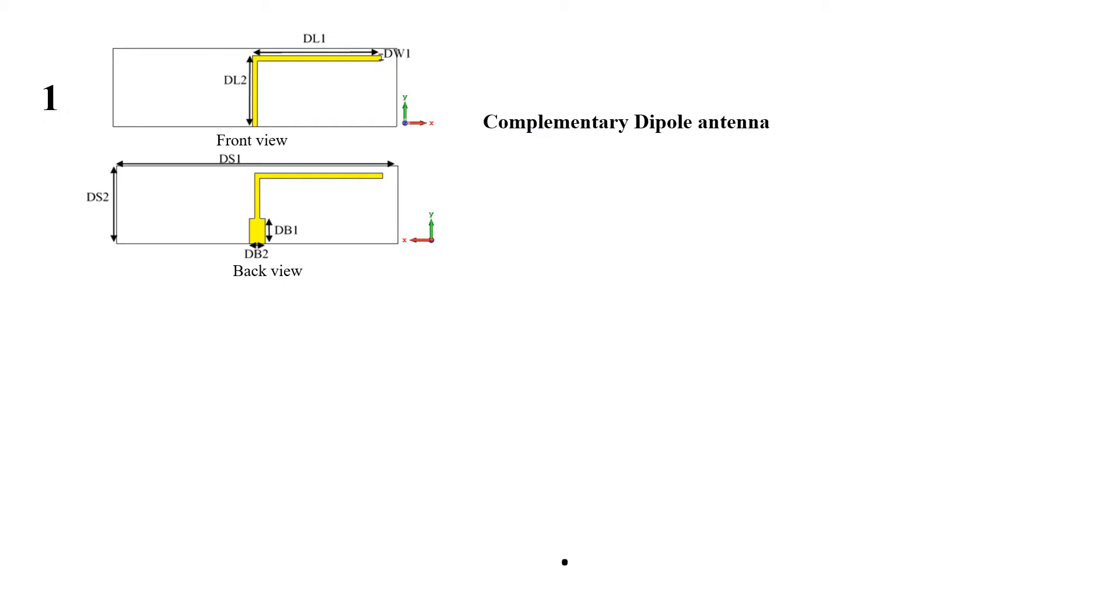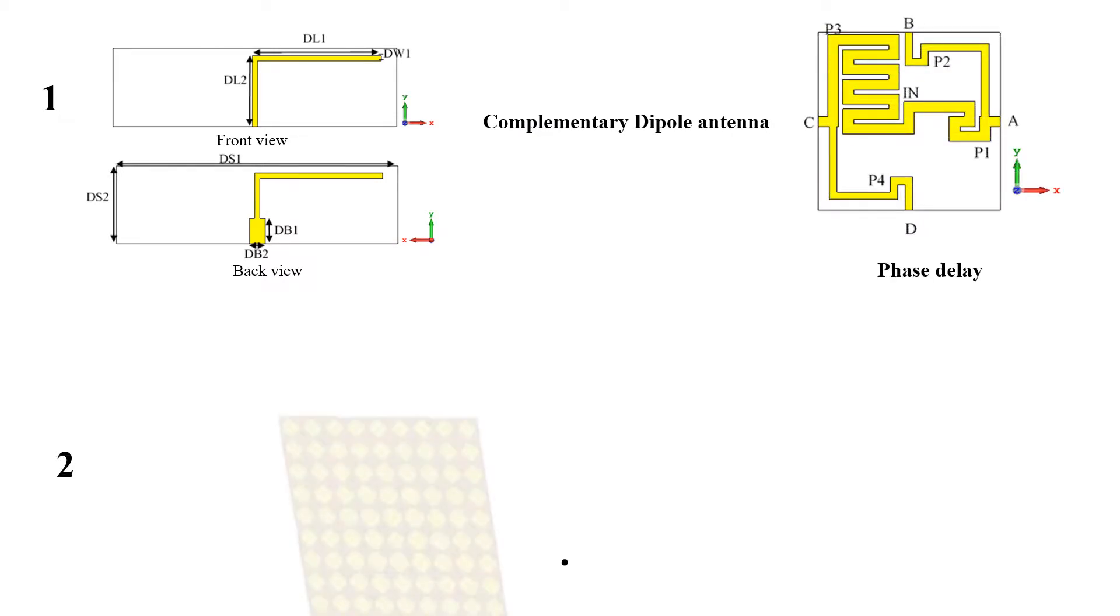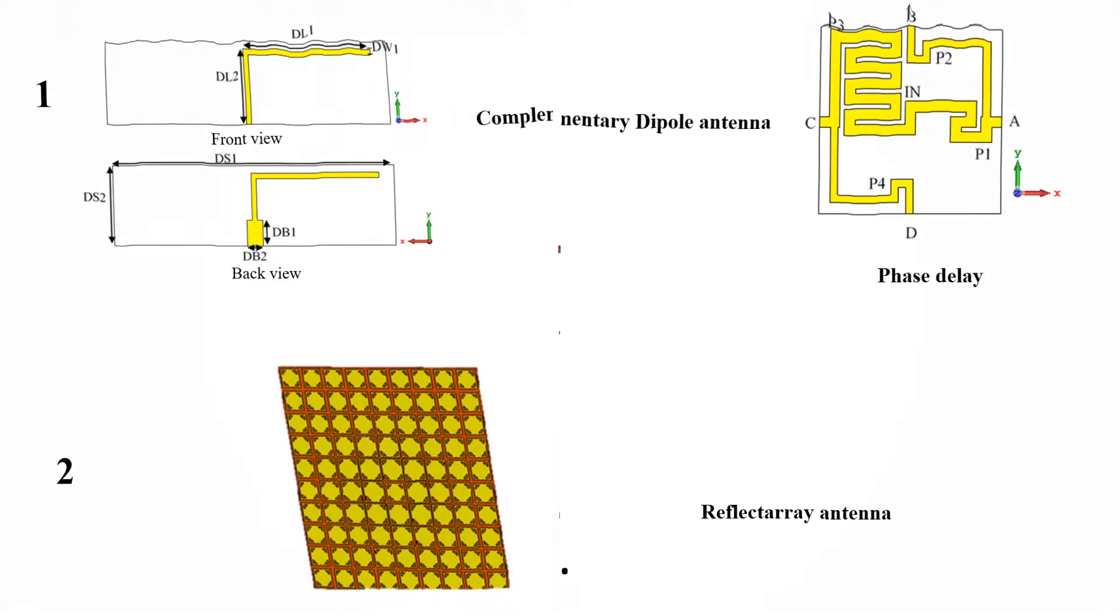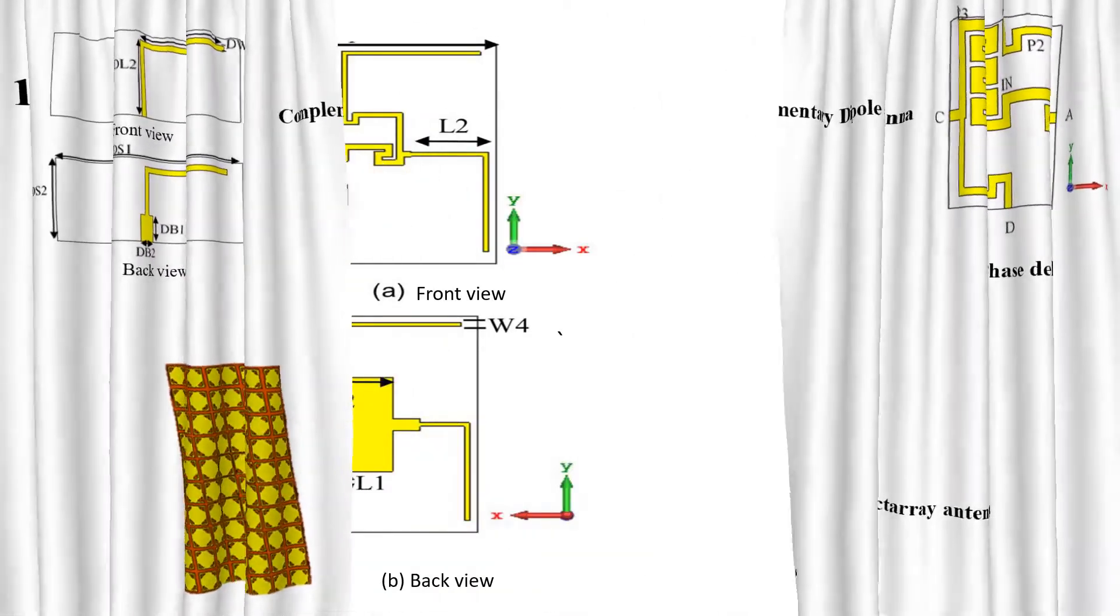The proposed 2.4GHz antenna is divided into two parts. The first part is a complementary dipole antenna with a phase delay line serving as a firing antenna. The second is a reflector array antenna serving as a reflector plane.